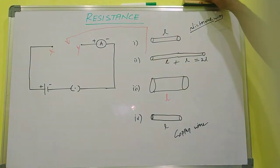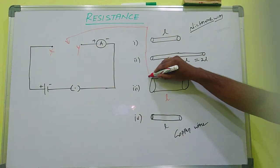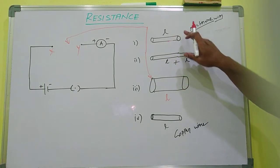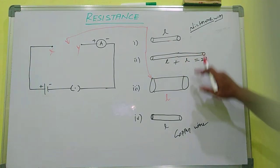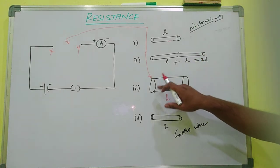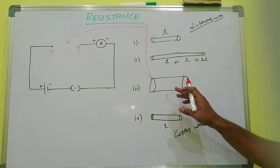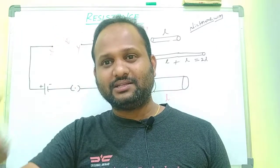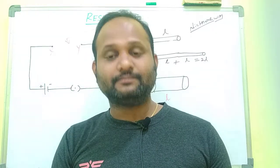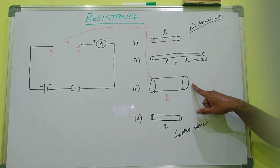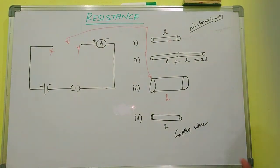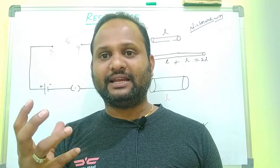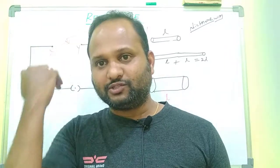In the third case, we use the same nichrome wire with the same length L and the same material, but the area of cross-section is increased. Now the ammeter shows an increase in reading compared to the first case. So while we are increasing the area of cross-section, the current in the electrical circuit increases, and the ammeter shows a higher reading.